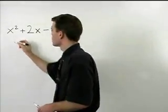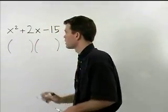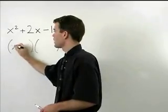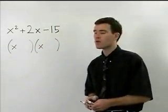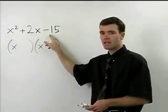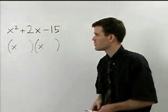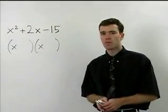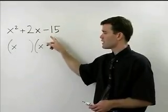We set up our two sets of parentheses. X squared breaks down into x times x, and what we're looking for are factors of negative 15 that add to positive 2. The difference between this problem and the ones in the last section is that your constant term is negative.